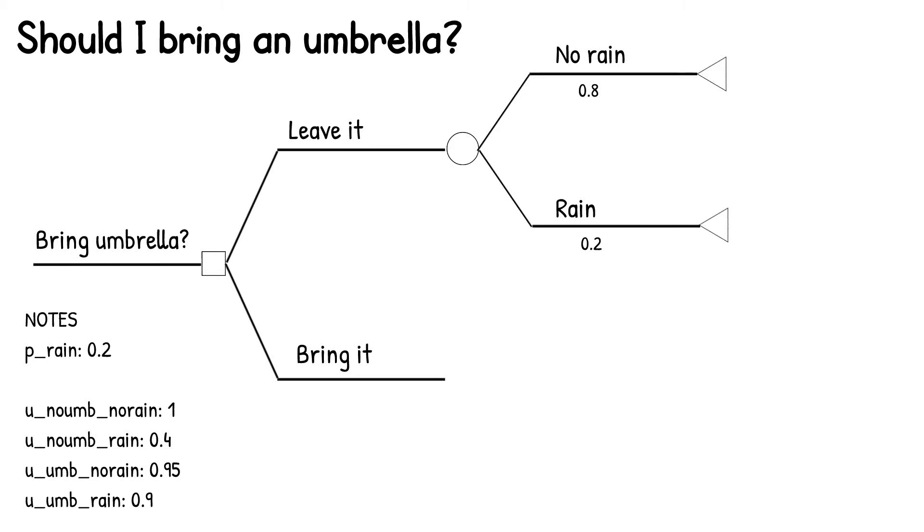As we turn our attention now to the bottom branch where we bring an umbrella, you'll see that actually the architecture looks really similar, because the possibilities are the same, and the probability of it raining or not is the same. So actually you basically just copy and paste that branch down here. The last thing to add for the general architecture of our tree are the utilities themselves for the different outcomes, which I'll just pull from the bottom left and jot down the variable names over here.